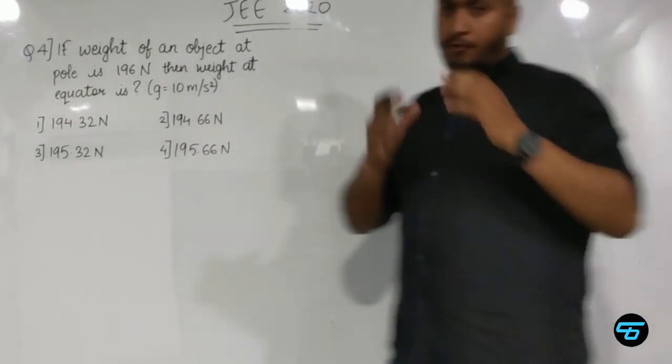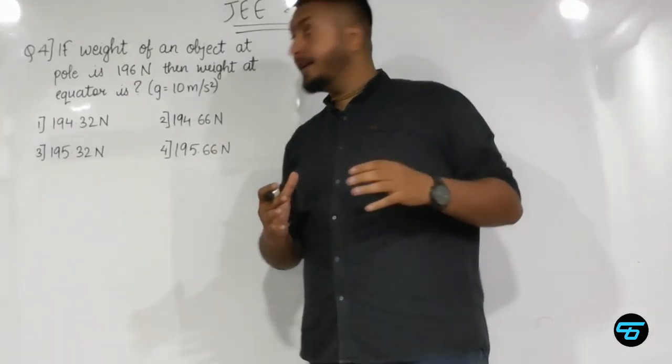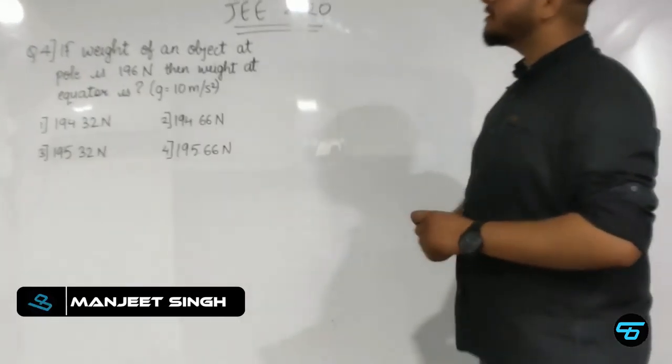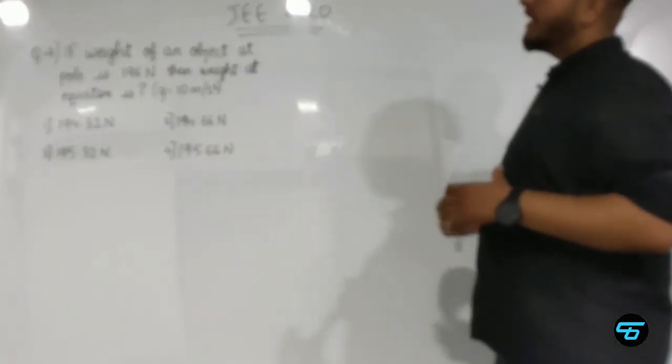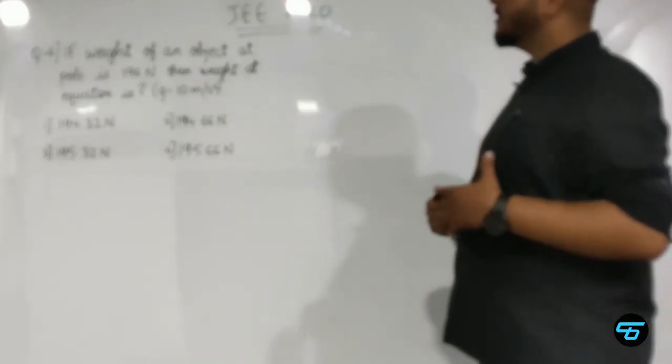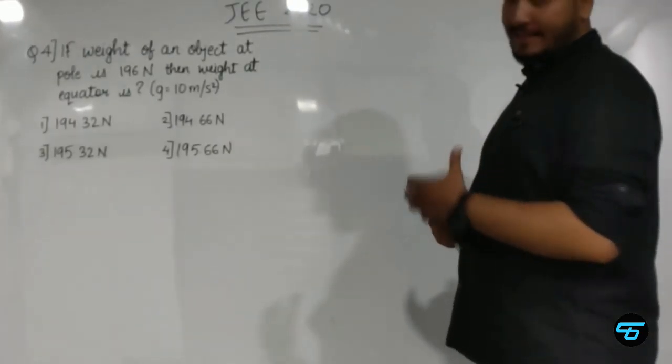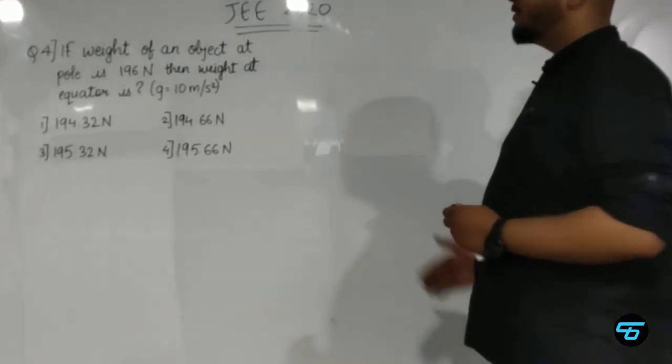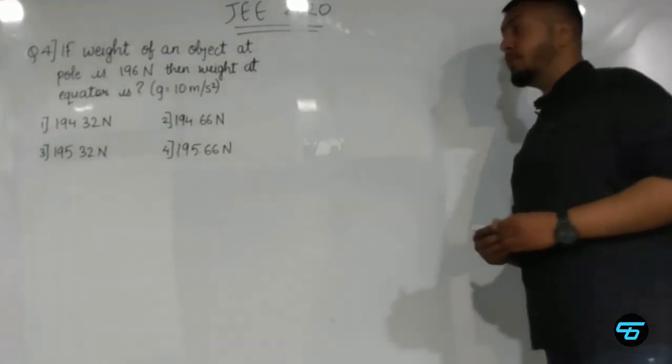Hello students, welcome to the fourth video of series JEE 2020. Our question is on gravitation. The question asks: if weight of an object at pole is 196 Newton, then what is the weight at equator? The options are: 1) 194.32 N, 2) 194.66 N, 3) 195.32 N, and 4) 195.66 N.